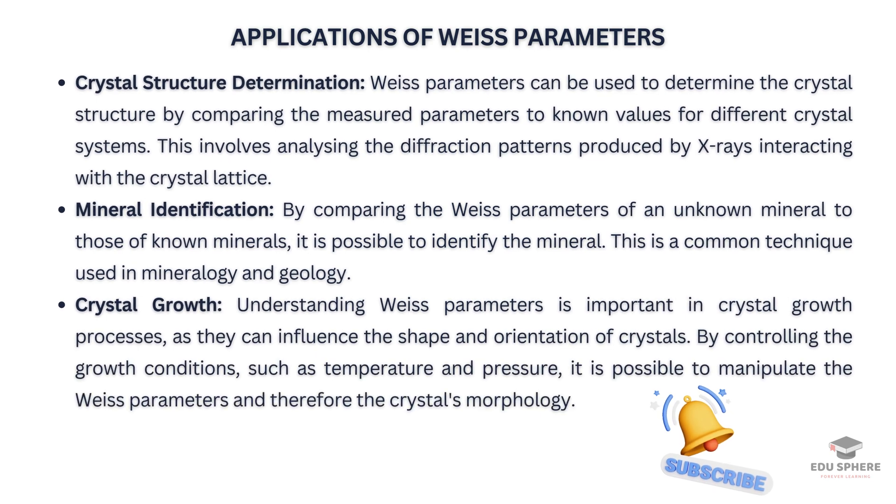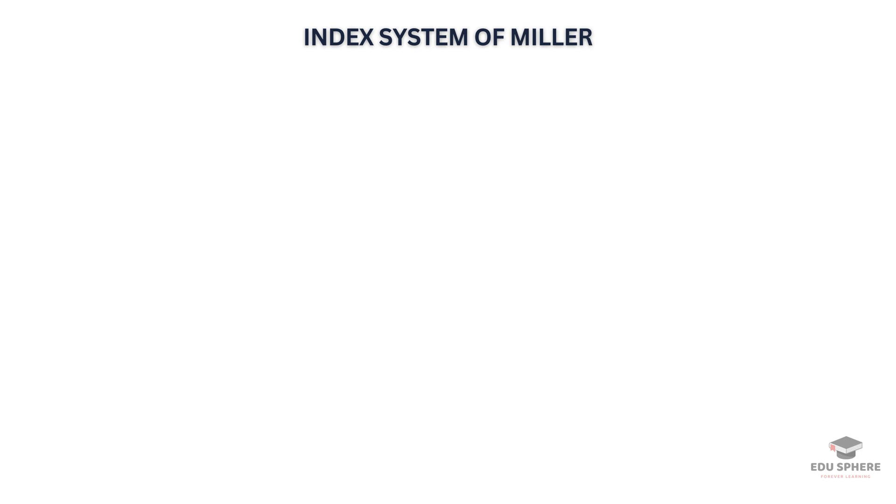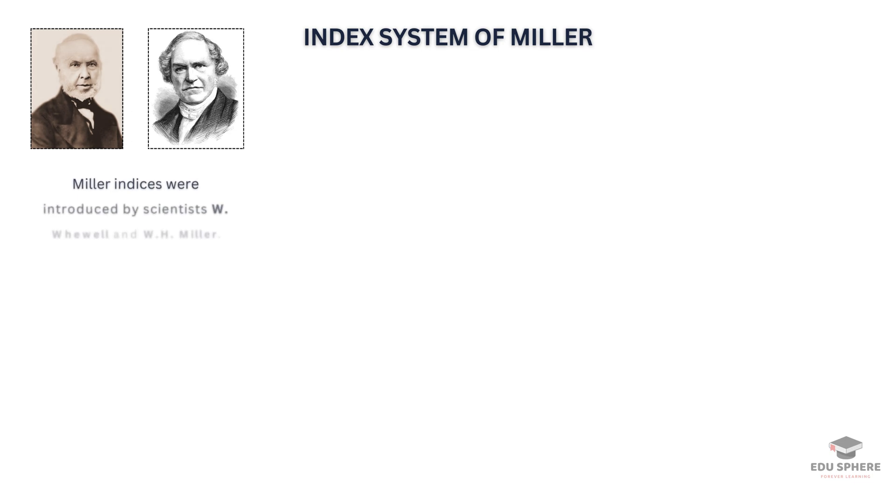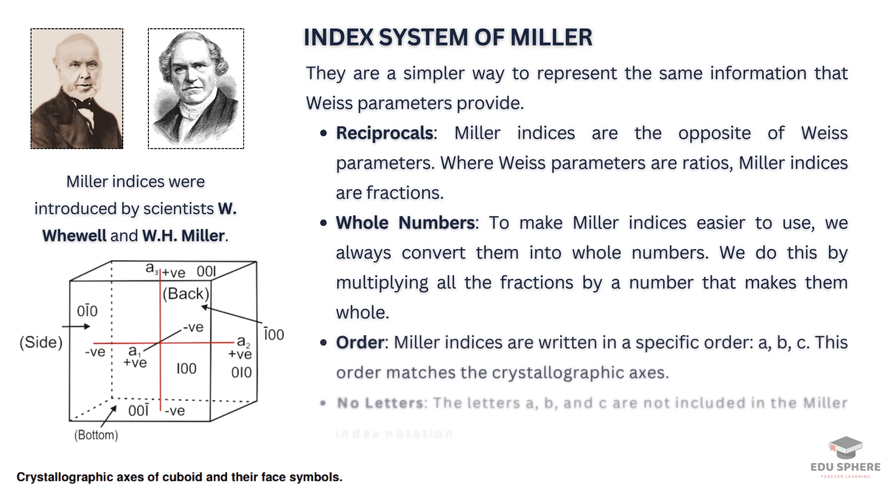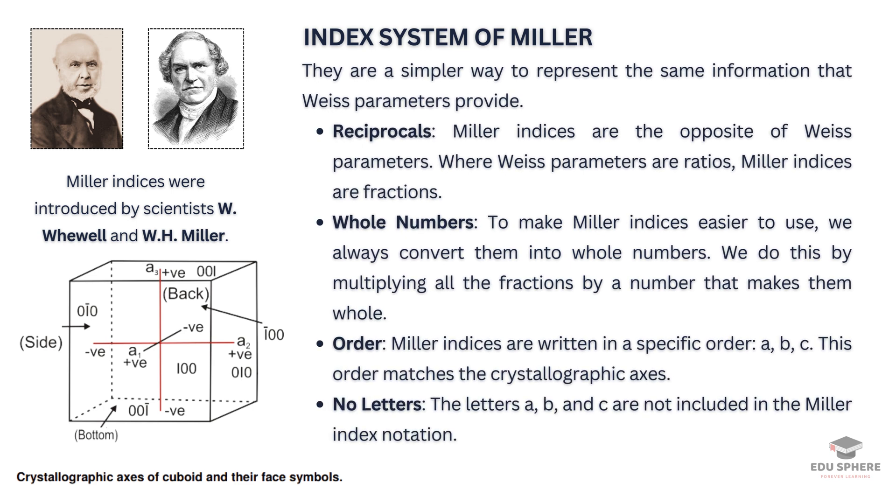Let us now discuss the index system of Miller. Miller indices were introduced by these two scientists. They are a simpler way to represent the same information that Weiss parameters provide. Miller indices are obtained by taking the reciprocals of the Weiss parameters and clearing any fractions. They are often easier to work with and are commonly used in crystallography.